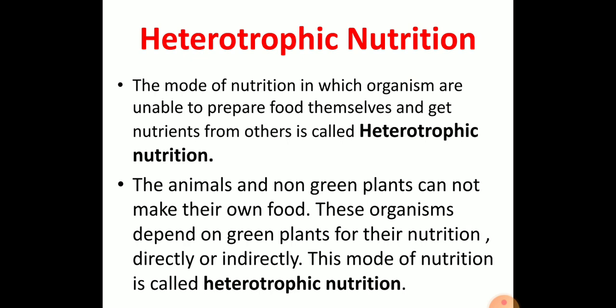Now let us understand heterotrophic mode of nutrition. The mode of nutrition in which organisms are unable to prepare food themselves and get nutrients from others is called heterotrophic nutrition. Animals and non-green plants cannot make their own food, so they show heterotrophic mode of nutrition and they are known as heterotrophs.